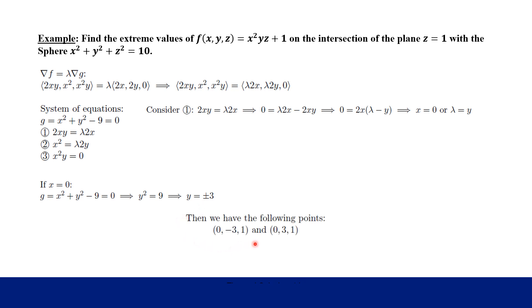The x = 0 case gives us two candidate points. Since we're looking for X, Y, and Z values, and we know z = 1 from our plane, the points are (0, +3, 1) and (0, −3, 1). We add these to our list of points where the maximum and minimum might occur.